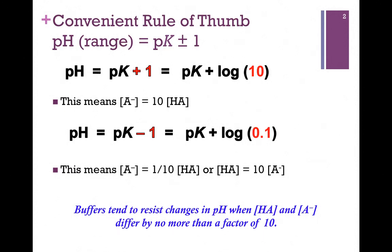Here's our convenient rule of thumb for determining the effective range for a buffering system: pH equals pK plus or minus 1, or buffers tend to resist changes in pH when the concentrations of the acid and its conjugate base differ by no more than a factor of 10. This will be a convenient rule of thumb to keep in mind when calculating acid and base problems.